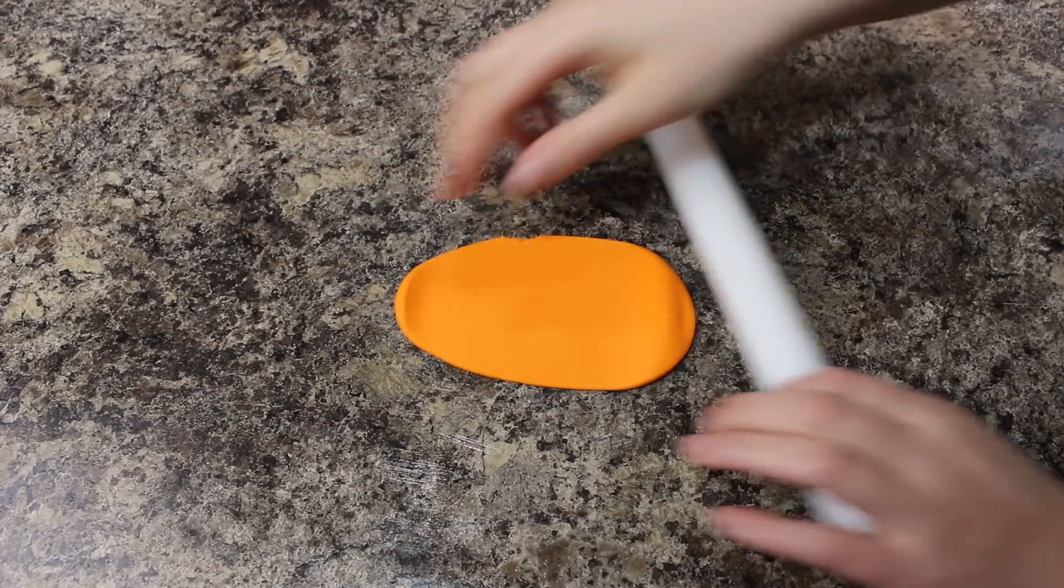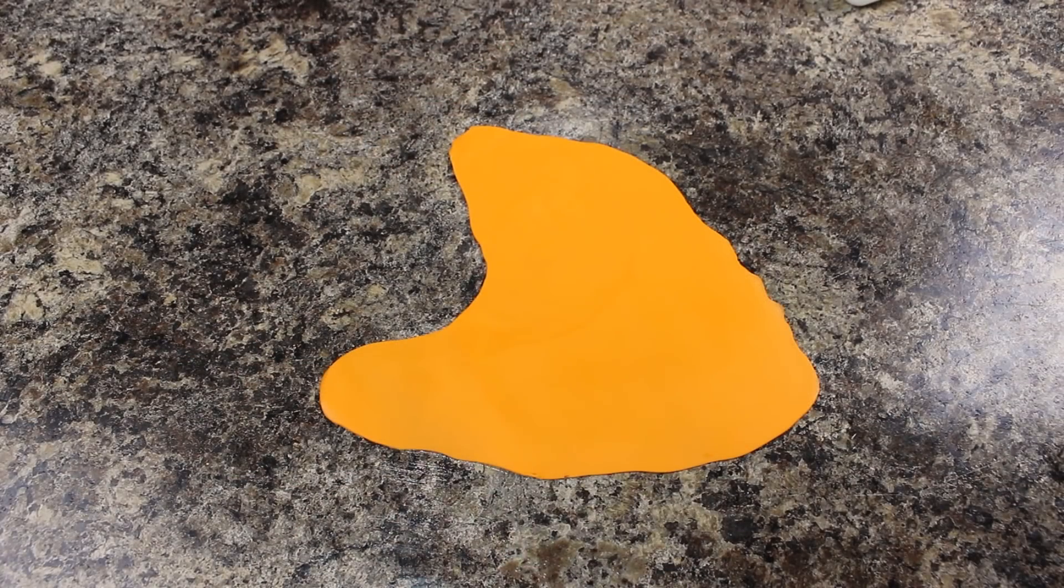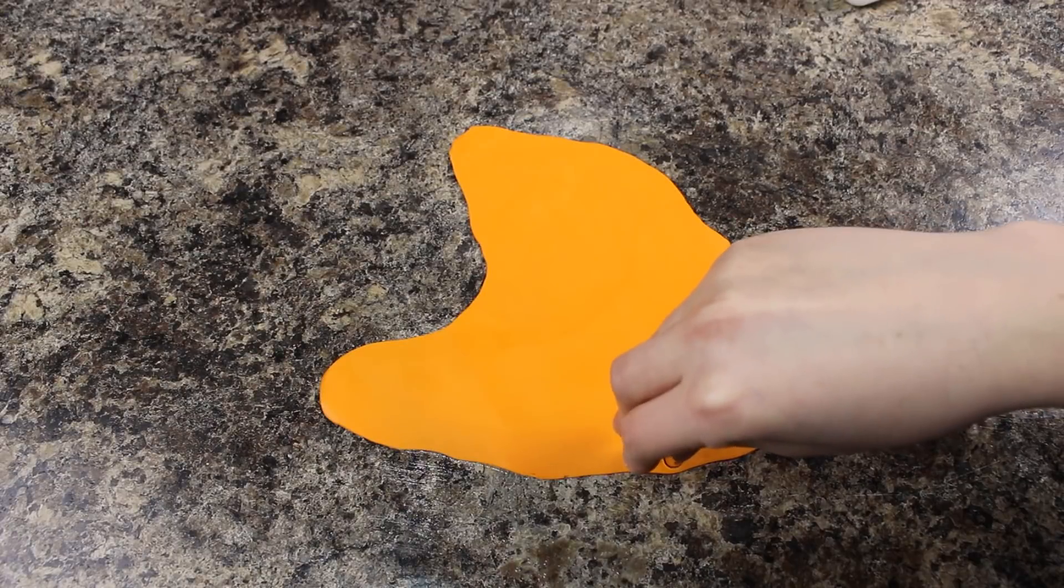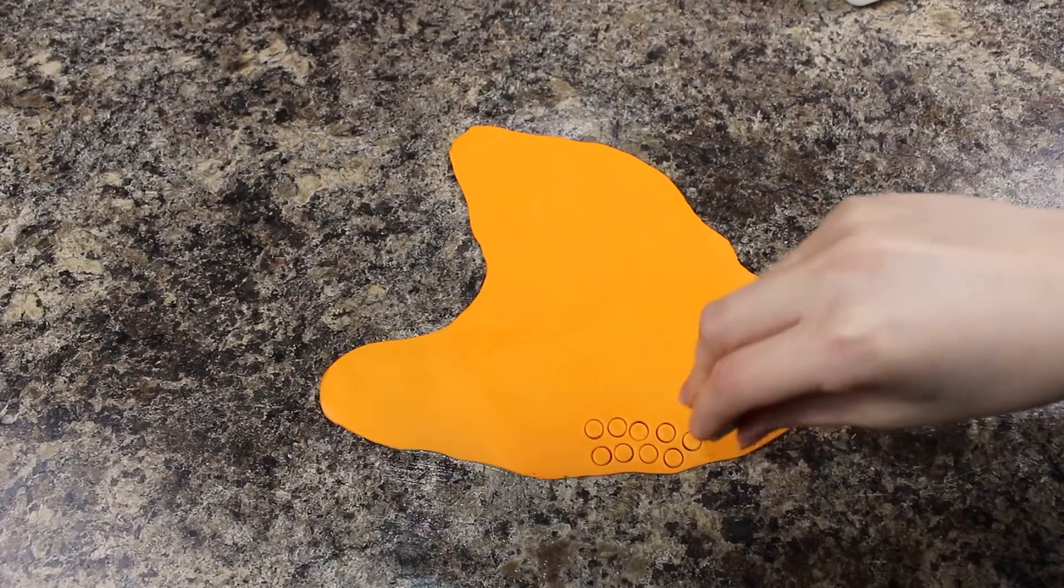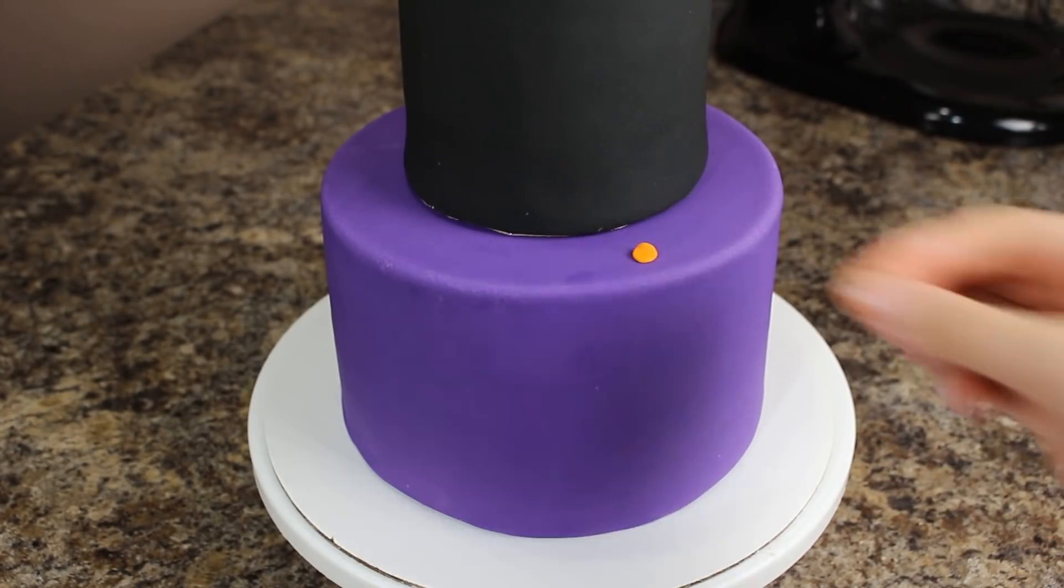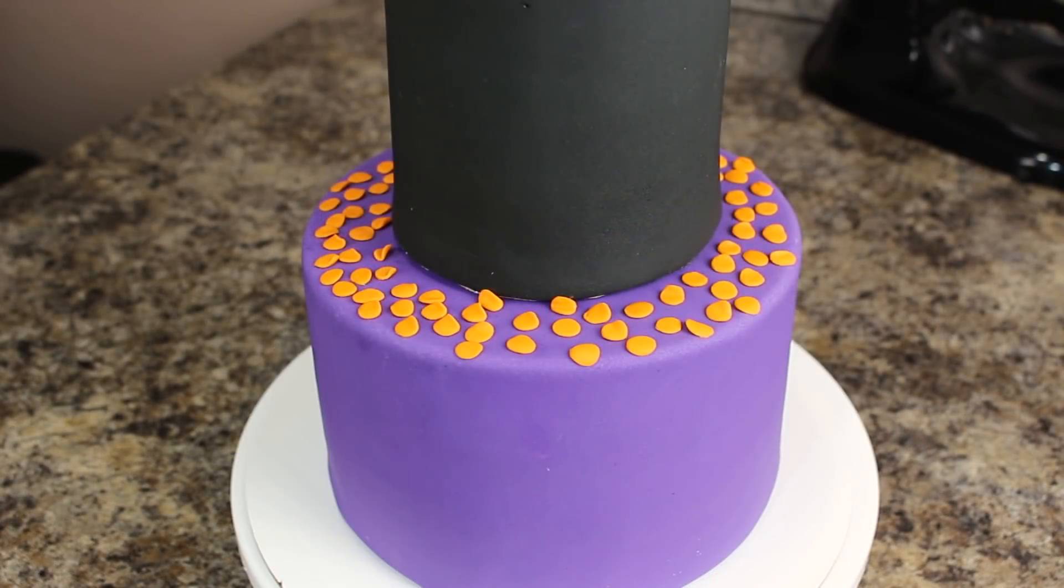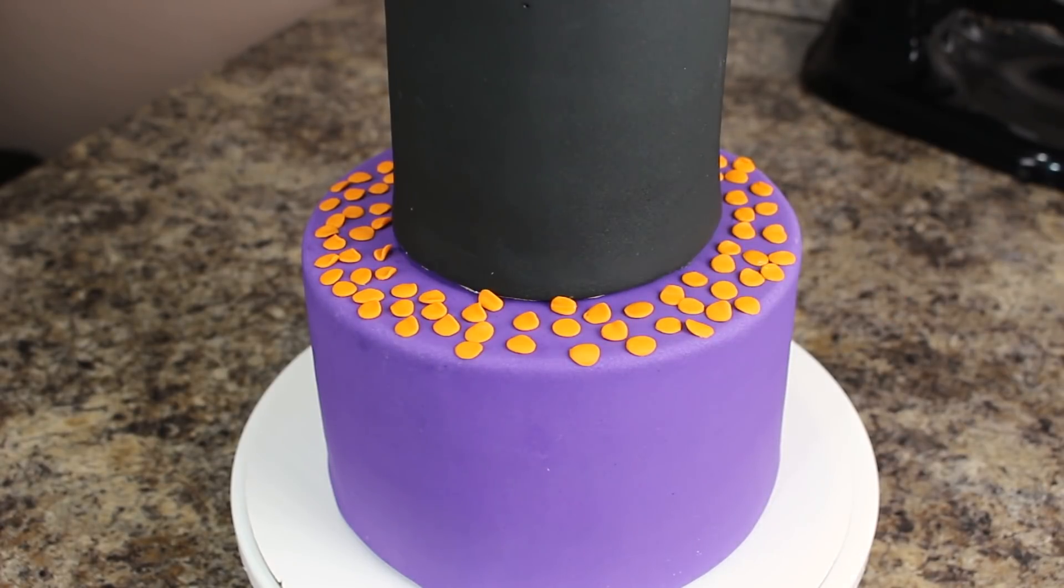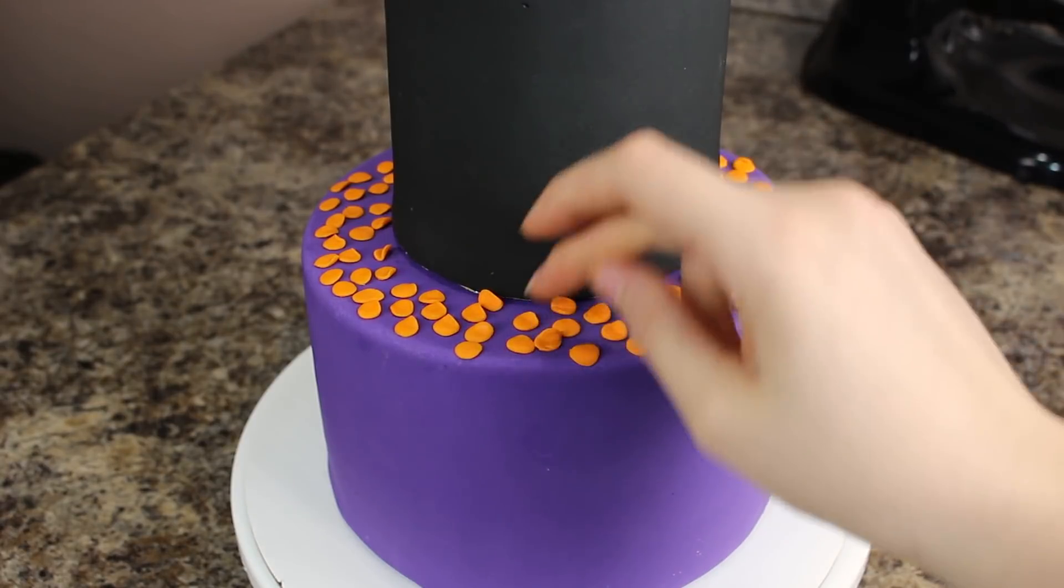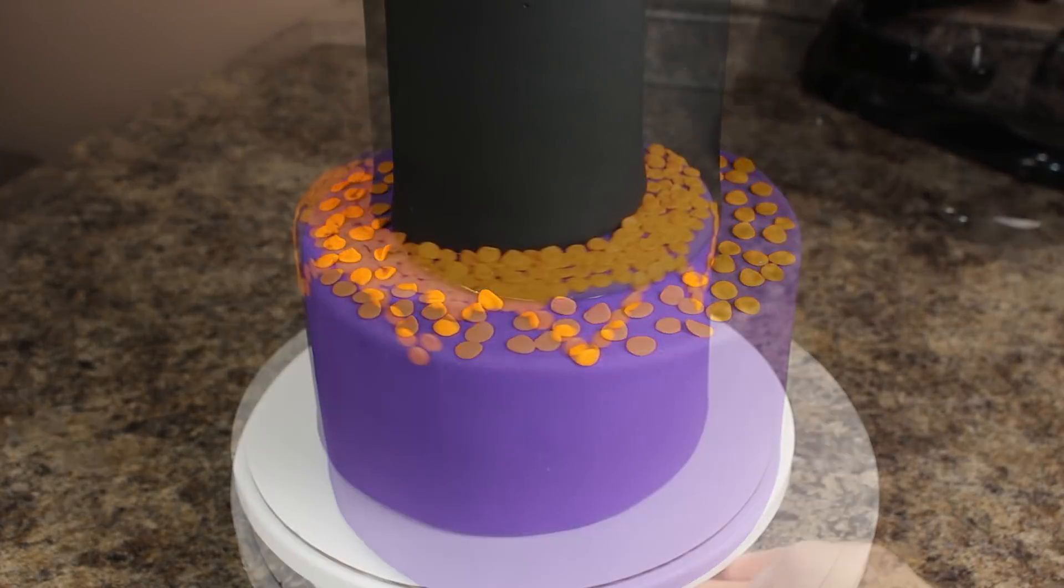And now for the most time-consuming part of the whole cake, I have some orange fondant that I'm rolling out fairly thin. And then using the tip of a piping tip, I'm just cutting out a ton of circles. And when I say ton, I mean a ton. I want these circles to look like the petals of the marigold flower that are in Coco. So I've thinned out the edges using a balling tool on some of them and I'm placing those all around the top of my bottom tier. I'm making sure a couple of them have turned up edges because they wouldn't all be laying flat against the cake because that's not how petals naturally would sit.